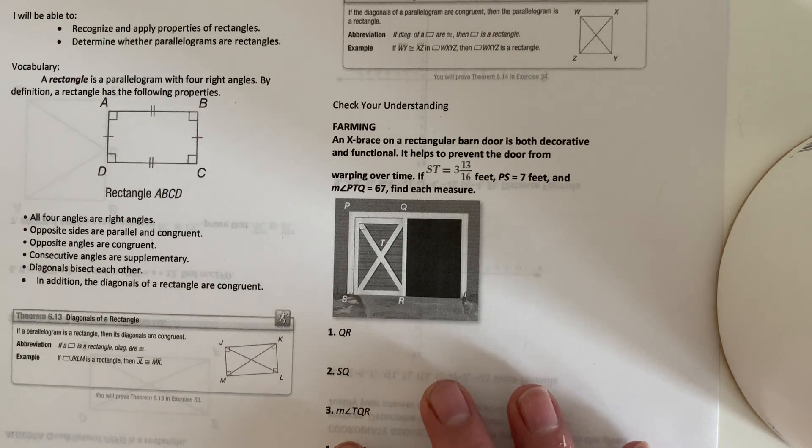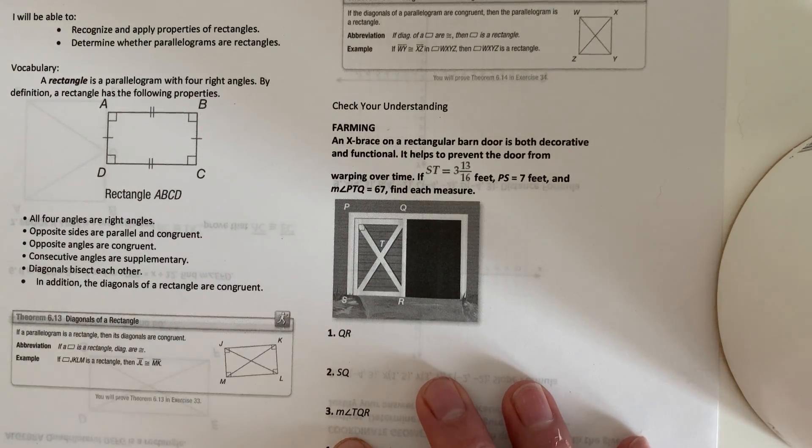All four angles are right angles. Opposite sides are parallel and congruent. Opposite angles are congruent. Consecutive angles are supplementary. Diagonals bisect each other. In addition, the diagonals of a rectangle are congruent.